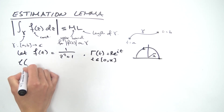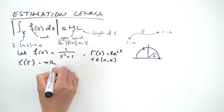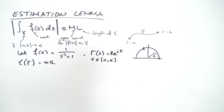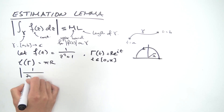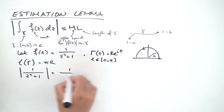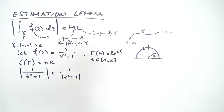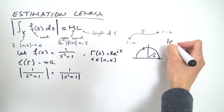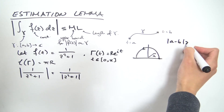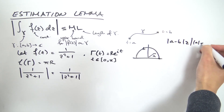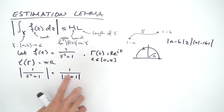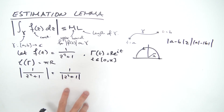The length of the curve Gamma is simply pi times r, which is half the circumference of the circle. For M, we need the maximum of |f(z)| on this semicircle. Taking the absolute value of 1/(z² + 1), this equals 1/|z² + 1|. We'll use the reverse triangle inequality, which states that |a - b| ≥ ||a| - |b||.